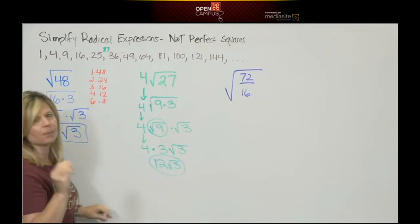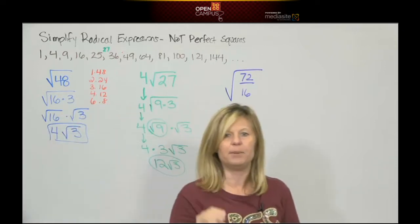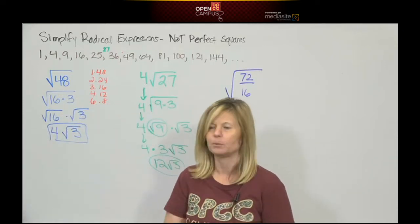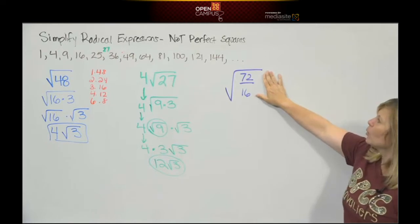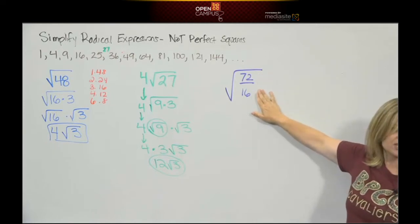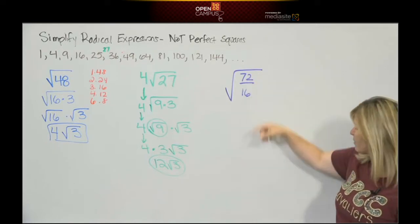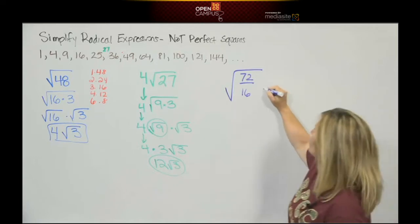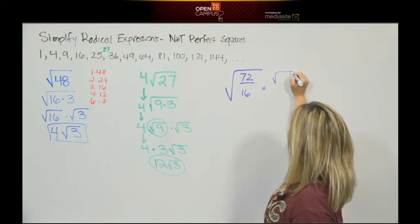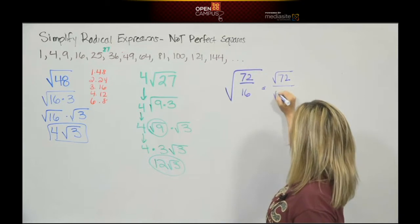The goal is to break down the root by finding the biggest perfect square as a factor. We have the square root of 72 over 16. We have a fraction in here. Well we understand that means the square root symbol belongs both to the numerator and to the denominator.